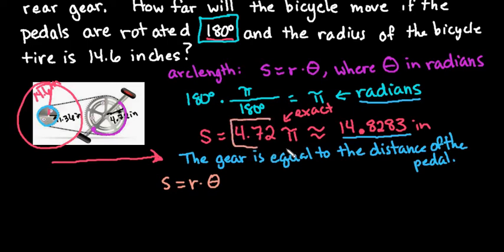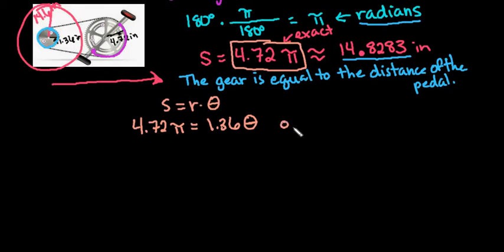We're going to use the same formula, S equals R times theta. Now we know S. So we can plug it in as 4.72 pi equals my radius of the gear, which is 1.36, times my angle of rotation theta. This time our unknown is our radian measure. You could also set it up as 14.8283 equals 1.36 theta. These gave me the same answer when I did the math. Had I rounded this to 14.8, there would have been a lot more error.